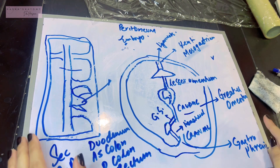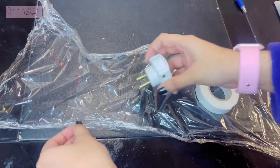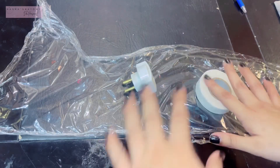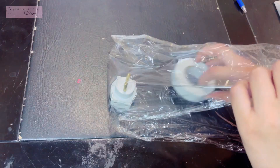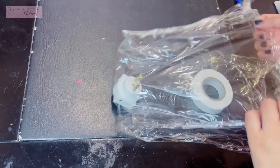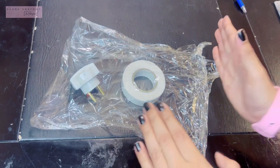Primary retroperitoneal organs are those that never had a mesentery and were always retroperitoneal — these include organs like the ureter and the kidney. Now I will give you a visual representation of how everything is placed in the abdomen.